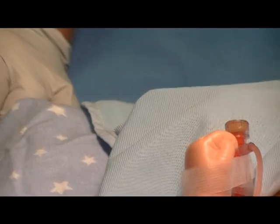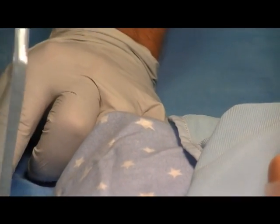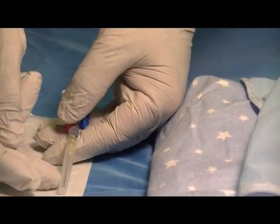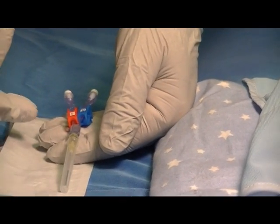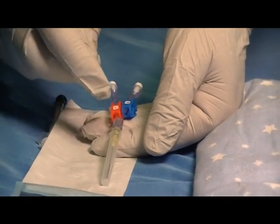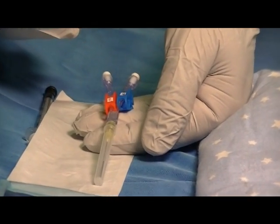Next, open the Humi Microdraw device and inspect it for integrity. These sterility covers should be in place over the blunt tube. The white vent caps should be in place on the lines, and the red and blue clamps should be present.